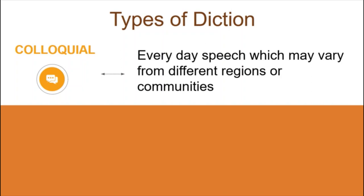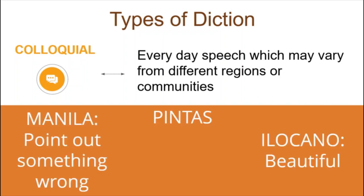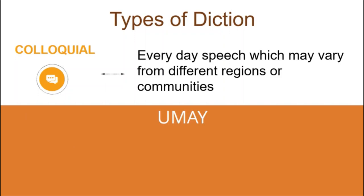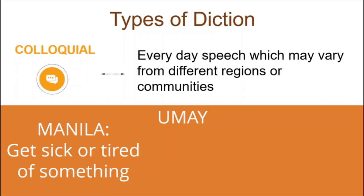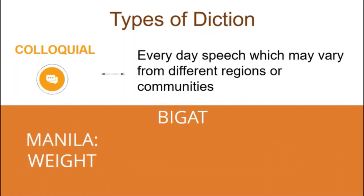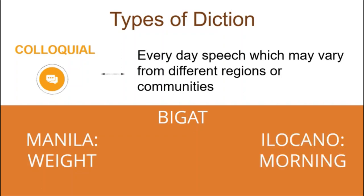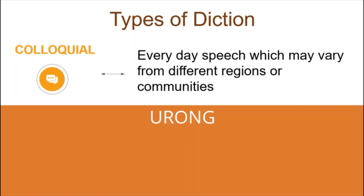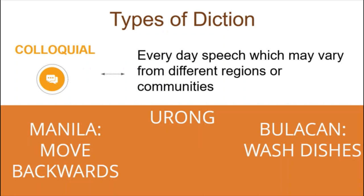In the Philippines, there are more than 150 languages and dialects. Dialects are the variation of languages depending on the location or region. For example, the word pintas — in Manila, when you make pintas, you point out something wrong or see fault in someone. In Ilocano, it actually means beauty or someone is beautiful. The word umay in Tagalog means nagsawa na — you're already sick or tired of something. But in Ilocano, it means to go. Bigat in Manila means the weight or heaviness of something, but in Ilocano it means morning. Urong in Manila means to move backwards, but in Bulacan it means to wash dishes. These words vary from different regions — there are actually a lot of examples of colloquial diction in the Philippines.